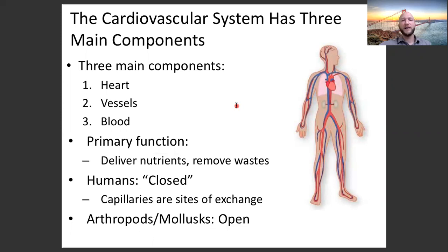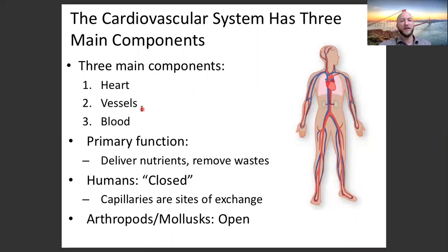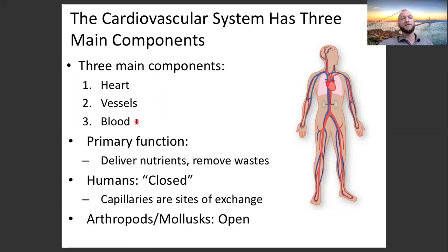The cardiovascular system has three main components. Cardiovascular is an anatomical name. Cardio refers to the heart, vasculature refers to vessels, the tubes. So the three main components of the cardiovascular system are the heart, the vessels, and blood — the stuff within the vessels and within the heart.